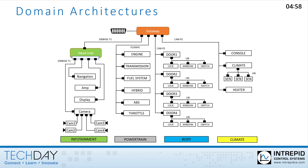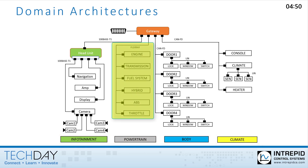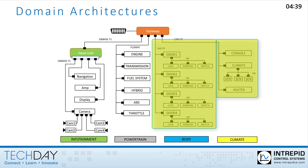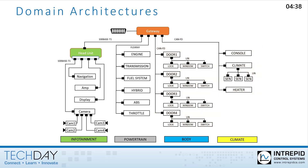Past and existing network architectures, often referred to as domain architectures, group networks and ECUs together based on their function within the vehicle. For example, there's often a powertrain network that controls the engine, transmission, alternator, and other parts of the vehicle associated with propulsion. Other functional domain groups could be heating and cooling, lighting, and body control. Data between these groups are often transferred through what is known as a gateway ECU.